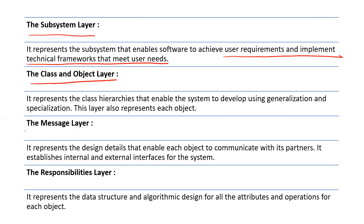Again, the message layer comes. What is the message layer? When we have different objects, they can interact with each other. Some will be the interface. Then comes the responsibility layer, in which the operations are performed in each object, the functions are performed, the algorithms are performed, and the data structures are represented.